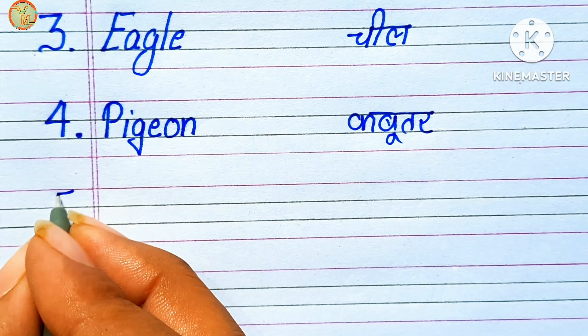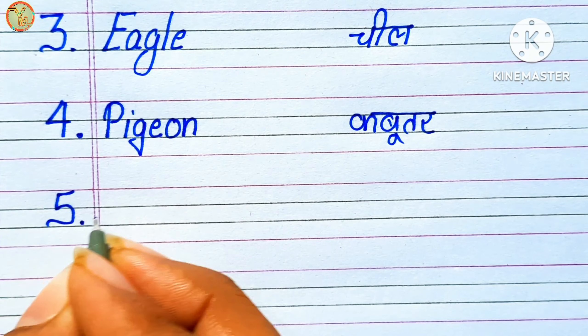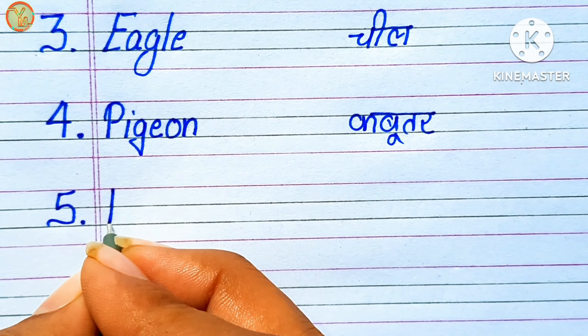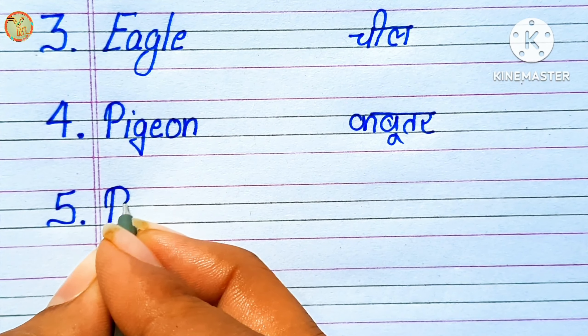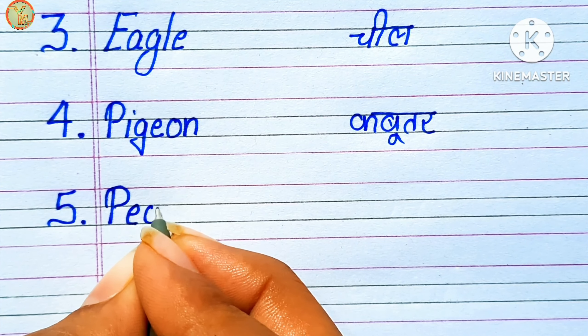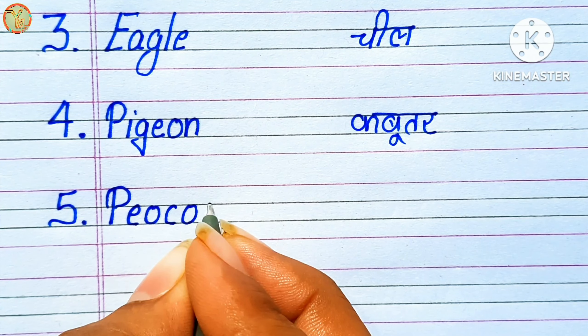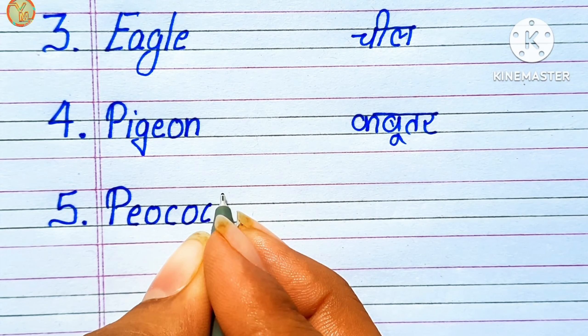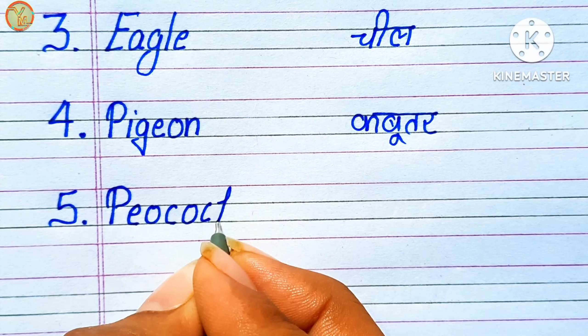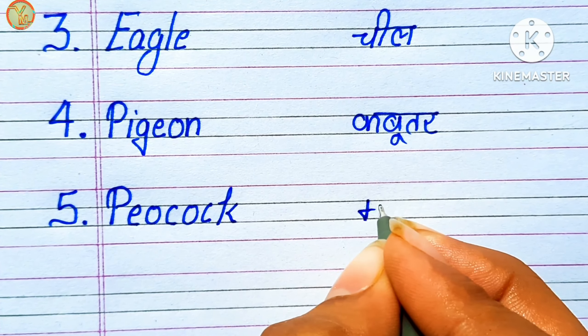Number 5. Peacock, P-E-A-C-O-C-K. Peacock means Moore.